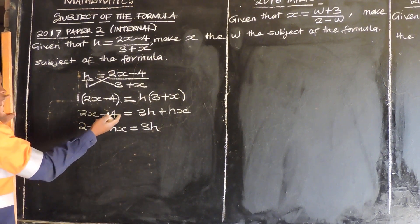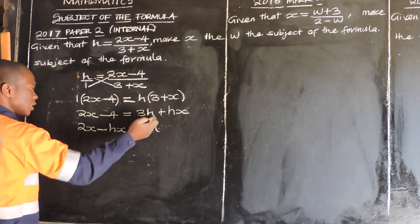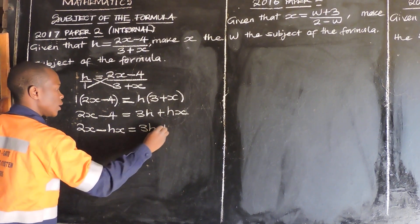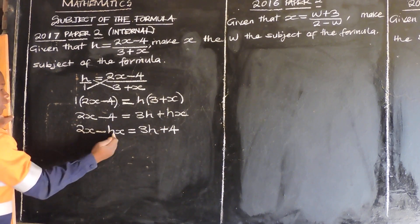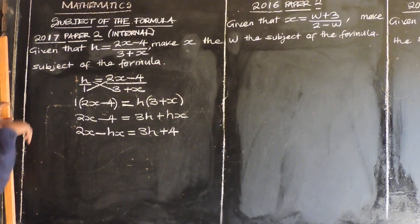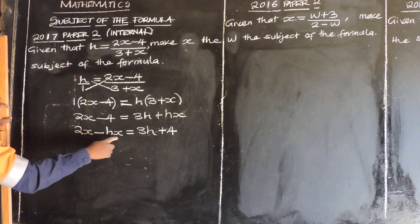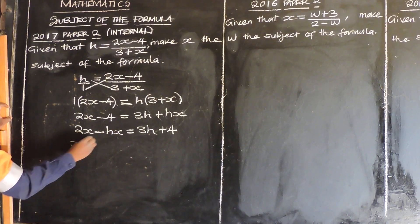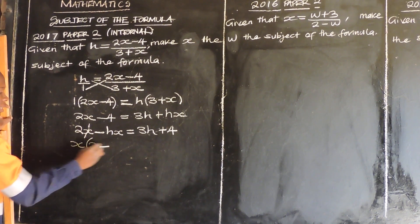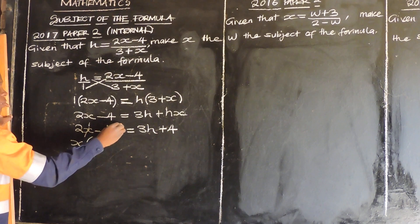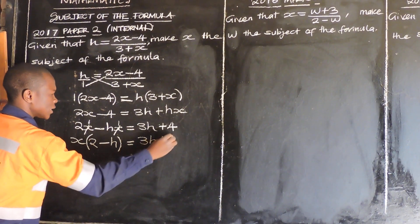Now since negative 4 has no x, we are only interested in our x terms. So this one is going to be transposed to the other side — it's negative, so it becomes positive 4. Since we have grouped the like terms together, we are going to factor out x since it is common. So x open brackets: x into x is 1, so we write 1 times 2 gives 2, minus 1 times h gives h, is equal to 3h plus 4.